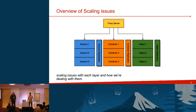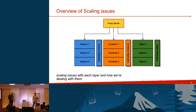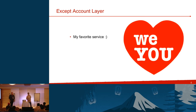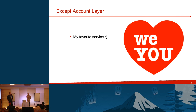Here's a quick introduction to Swift. There's a proxy server layer, and then three internal services: the account, container, and object layer. A client sends a request to the proxy, which routes it to one of those services — container listings, object listings, or object puts and deletes. We'll deal with scaling issues with each of these services. Except the account layer — we love you, account layer. It never goes down. I can't think of a single scaling issue we've had with it, partly because we limit customers to 500,000 containers.